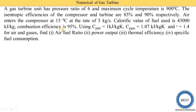Air enters the compressor at 15°C, so T1 is given, at the rate of 5 kg per second — this is the mass of air. Calorific value of the fuel used is 43,000 kJ/kg, so CV = 43,000 kJ/kg. Combustion efficiency is 95%. Additional parameters to consider: CP of air = 1 kJ/kg·K, CP of gas = 1.07 kJ/kg·K, and gamma = 1.4 for both air and gases.